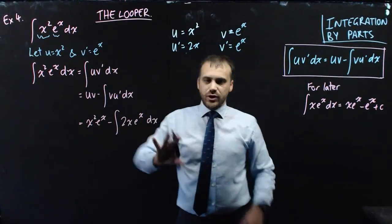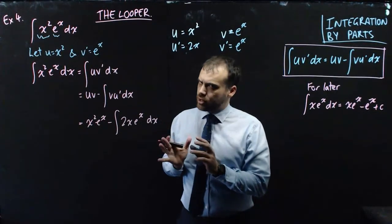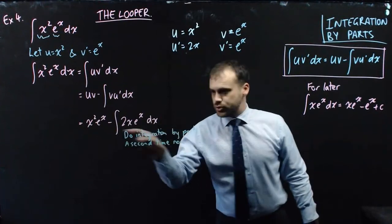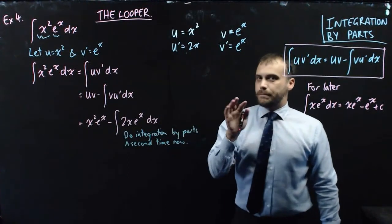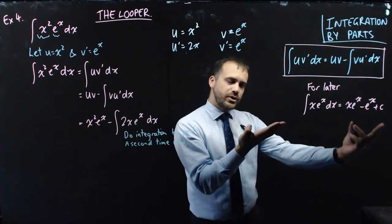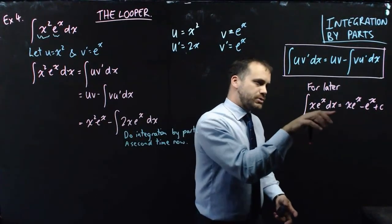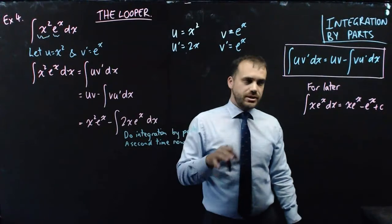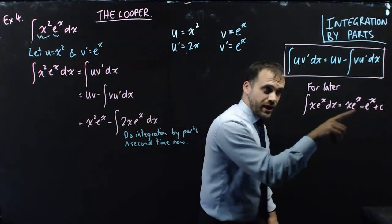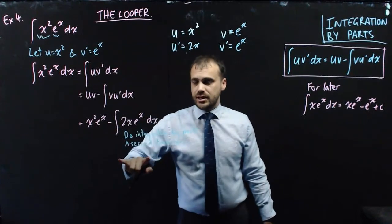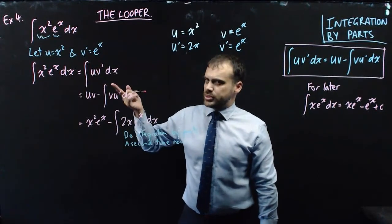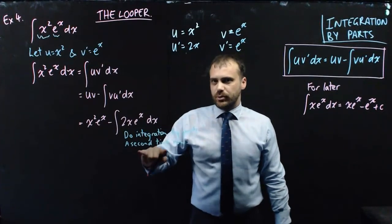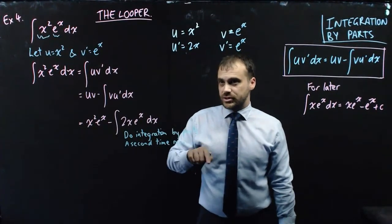This is where it ends up in a loop, because what we have inside this formula is itself another integration by parts. If no one had shown you anything before example 4, you would then have to go through a second round of integration by parts. But luckily, here's one I prepared earlier: we know the integral of x eˣ dx equals x eˣ minus eˣ plus c. That means the integral of 2x eˣ dx equals double that: 2x eˣ minus 2eˣ. So we can take that result and substitute it in — that's the looper.